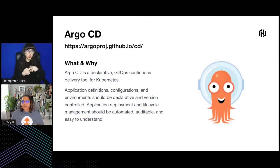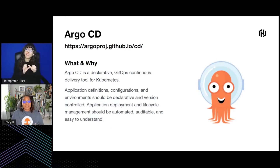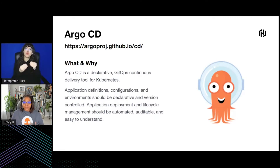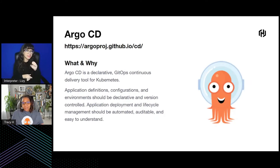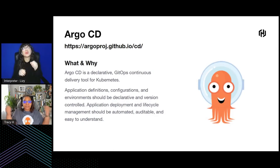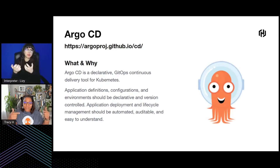GitOps relies on Git as the single source of truth for declarative configuration and active reconciliation. Argo CD implements active reconciliation by automatically monitoring your cluster, detecting any manual changes that aren't in the Git state, and adopting the GitOps methodology provides transparency between the application configuration. Basically, it makes it easier to ensure everything matches what you want, and if it doesn't match, it gives you an easy way to make that happen.